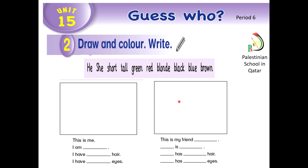Here, you should draw your friend. And here, write your friend's name. What's his or her name? Here, you should write he if your friend is a boy, or she if your friend is a girl.